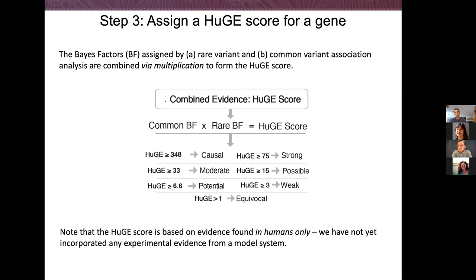The key thing I really want to be taken home from this: up to this point, all the evidence is based on humans only. We haven't incorporated anything that you might bring to the calculator — a preconceived notion that perhaps this gene is already involved in a phenotype. You have two pieces of evidence at this point as a scientist: if you come to the calculator with evidence from mouse, you now have independent evidence from human. These are two independent pieces of evidence that you can weigh as you justify potentially looking at this gene in further detail.